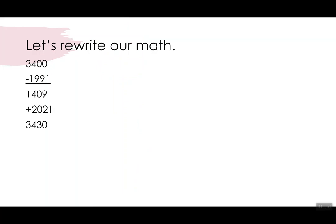Let's try it a different way. So if I take my math, the 3400 minus 1991 which is 1409, I add the 2021, I get 3430.